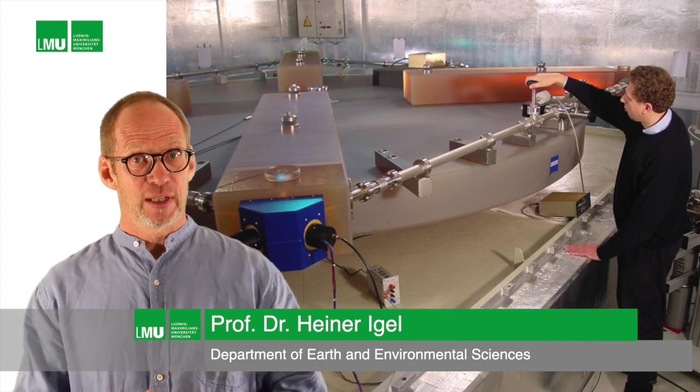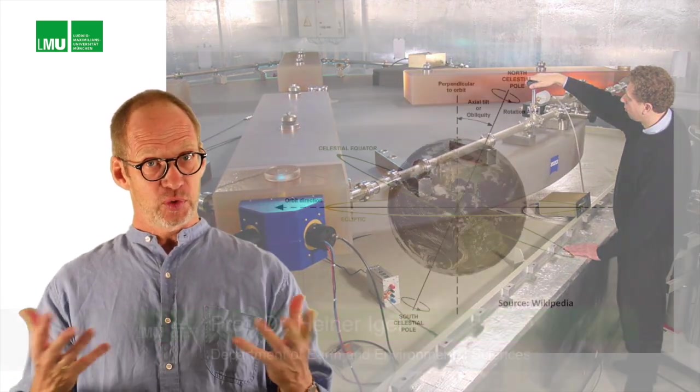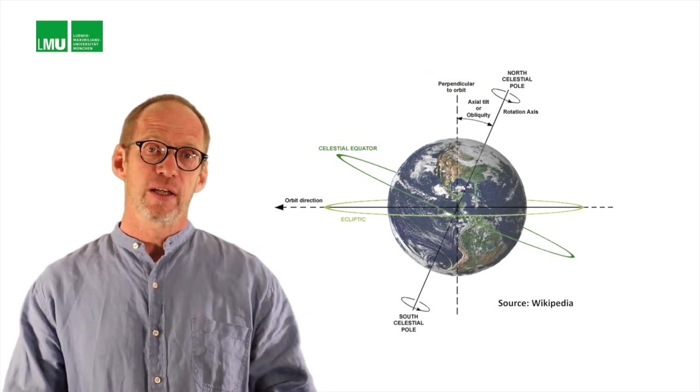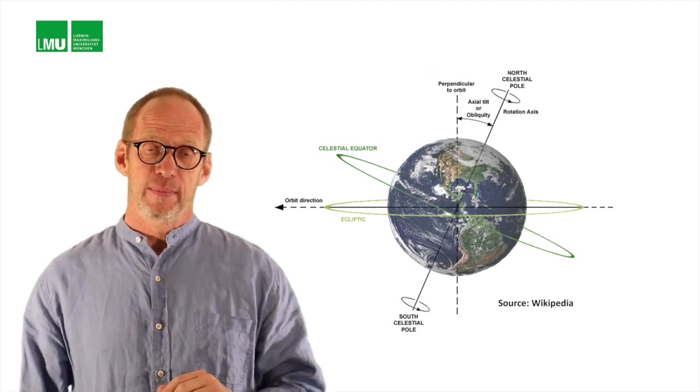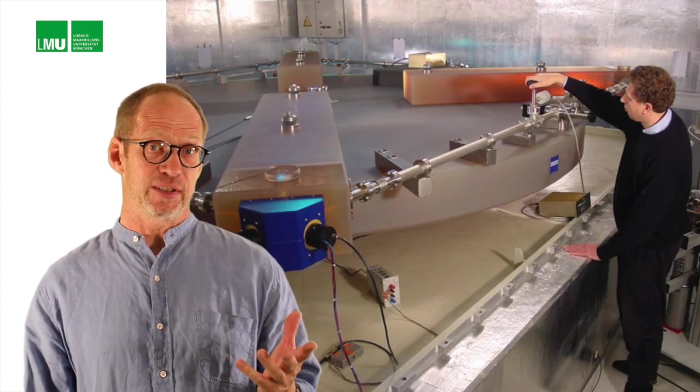Some 20 years ago, the so-called G-ring was built in Wetzel, 200 kilometers north of Munich, to measure the Earth's rotation rate with very high precision. It was based on the so-called ring laser technology.